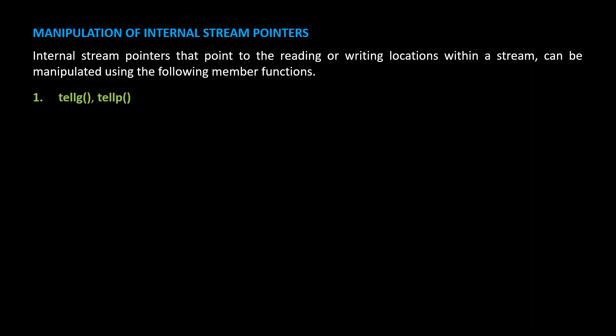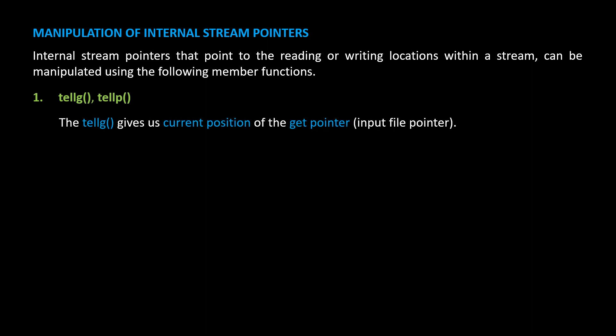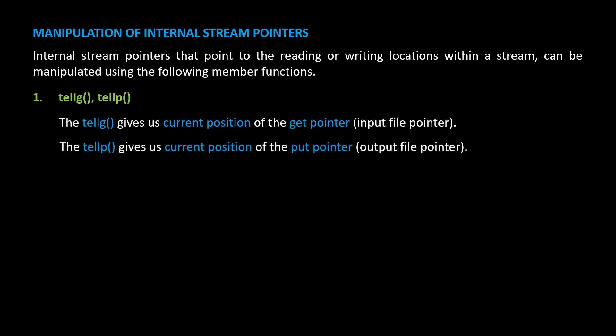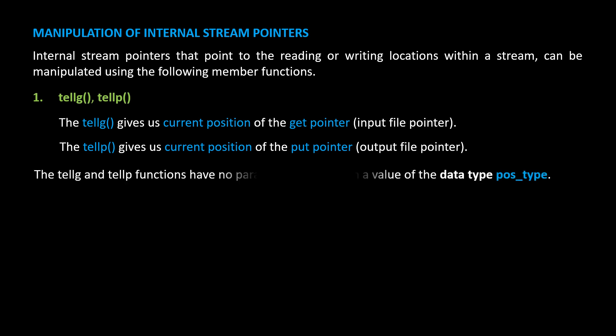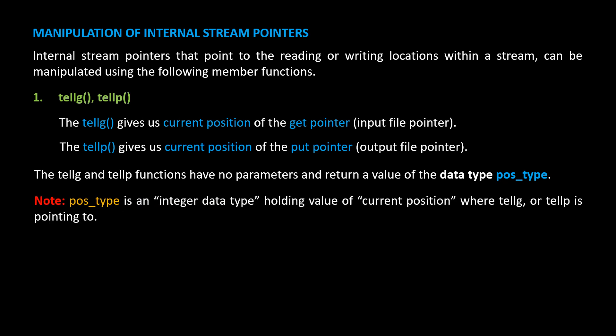Number one: tellg and tellp functions. The tellg function gives us the current position of the get pointer, or the input file pointer. The tellp function gives us the current position of the put pointer, or the output file pointer. Both functions have no parameters and return a value of data type pos_type, which is an integer data type.